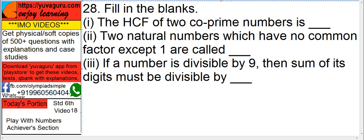Next, fill in the blanks: the HCF of two coprime numbers is 1. Two natural numbers which have no common factor except 1 are called coprime numbers. This is something we have covered many times up till now.